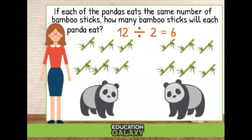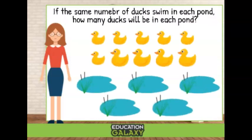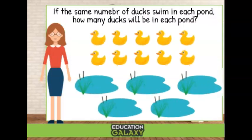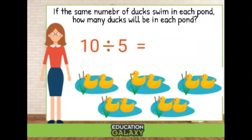We have time for one more problem. If the same number of ducks swim in each pond, how many ducks will be in each pond? Well, there are 10 ducks and five ponds. If we divide them up, we get 10 divided by 5. What answer is that? Way to go! The answer is two.